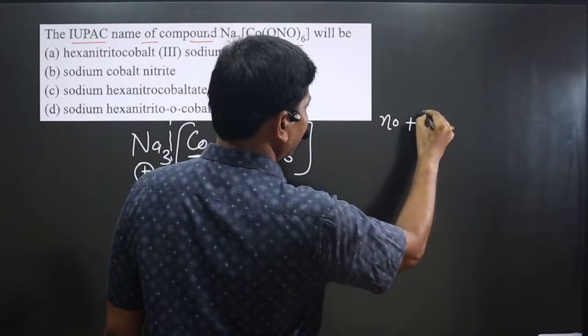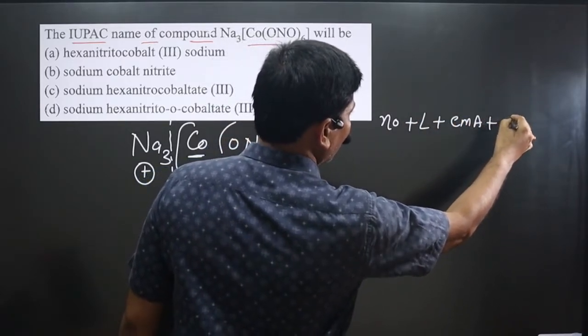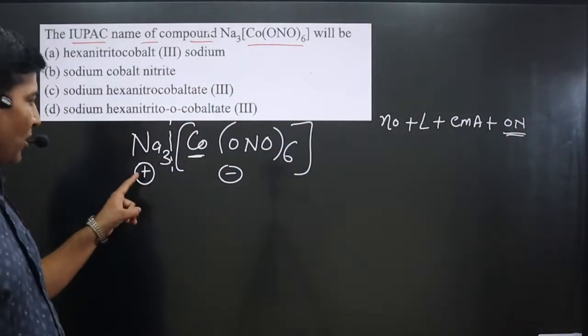First of all, we have to name the cationic part followed by the anionic part. This is the order we follow.